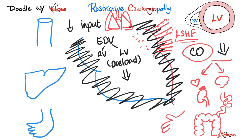Less blood to the fingertips causes Raynaud's phenomenon — the classic red, white, and blue color changes. Less blood to the liver causes ischemic hepatitis. Less blood to the gallbladder causes acalculous cholecystitis.